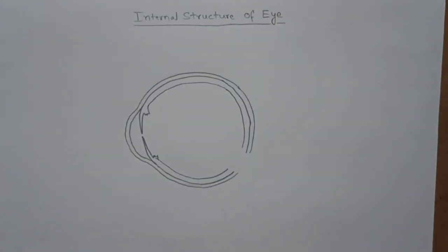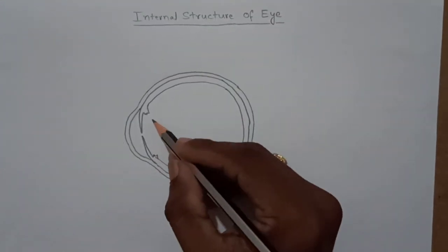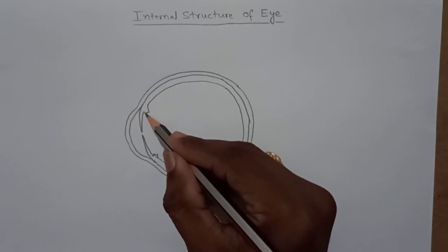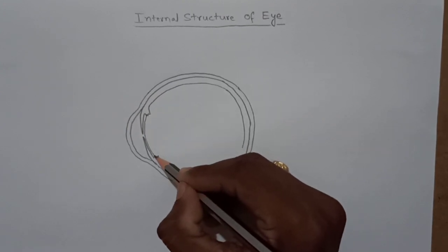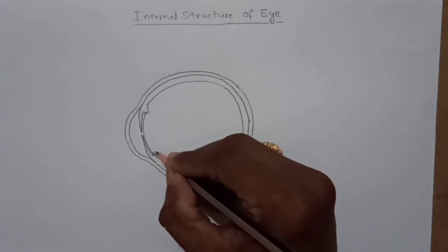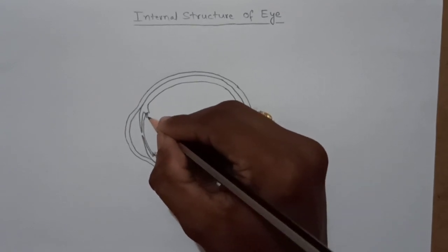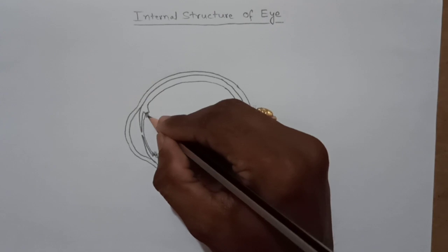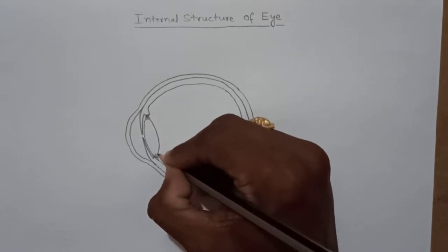And suspensory ligaments we can observe. We can observe the suspensory ligaments also here and the suspensory ligaments and the crystalline lens.